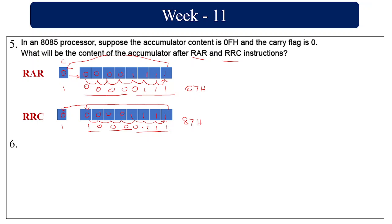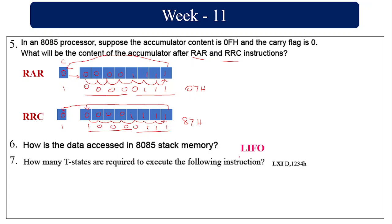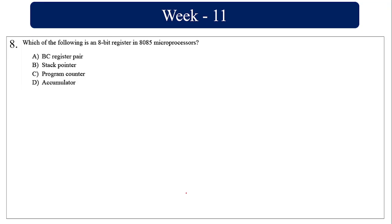Data is accessed in the 8085 stack memory using Last In First Out (LIFO). For LXI D, the instruction loads the D register pair: D is loaded with 12 and E with 34. To execute it: opcode fetch takes 4 T-states, reading data 12 from memory takes 3 T-states, and reading 34 takes another 3 T-states — totaling 10 T-states.